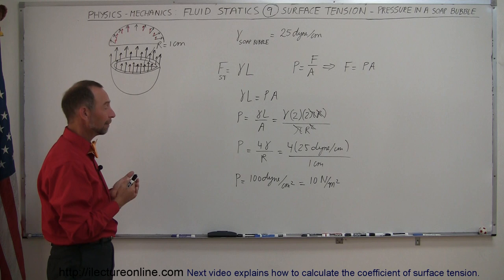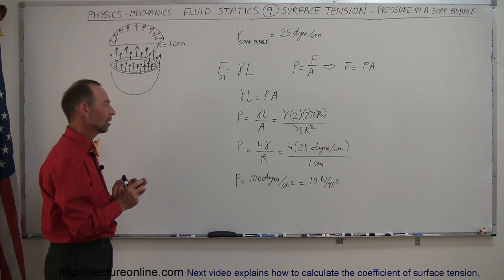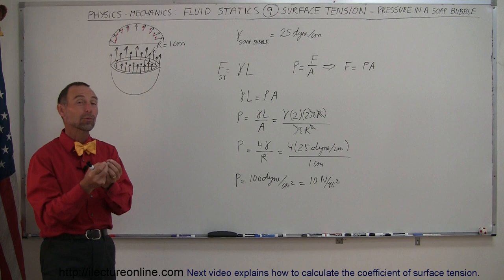Now if the soap bubble gets smaller, the pressure will increase, because then we have the ratio of the area to volume changes. It will be a much greater surface area to volume ratio, and if there's more surface area, that means there's more surface tension, and therefore the pressure builds up.